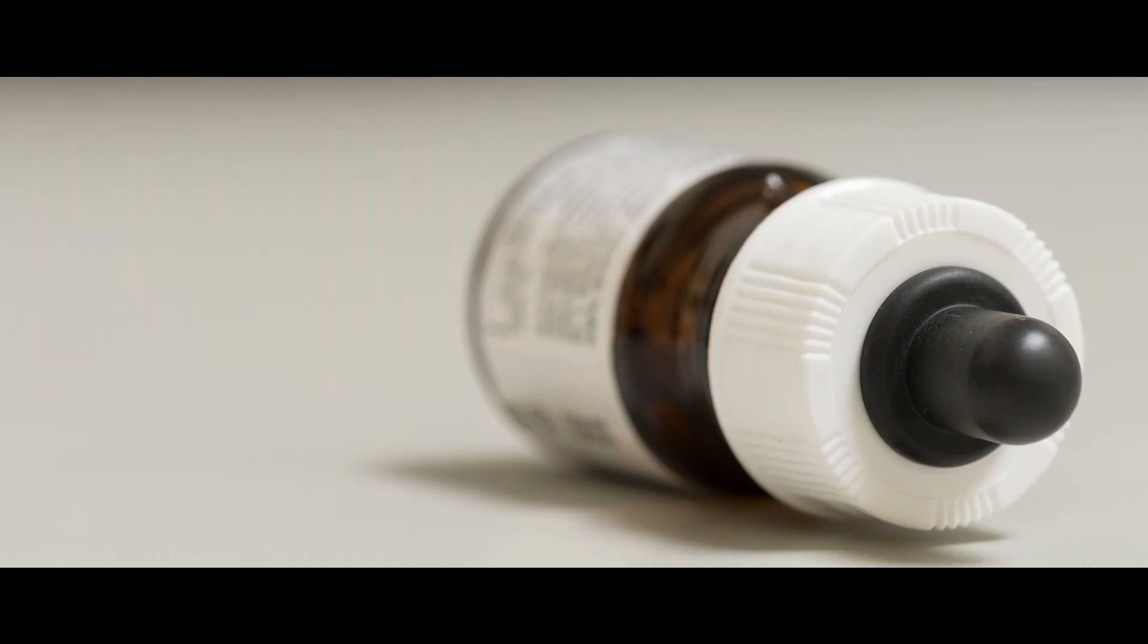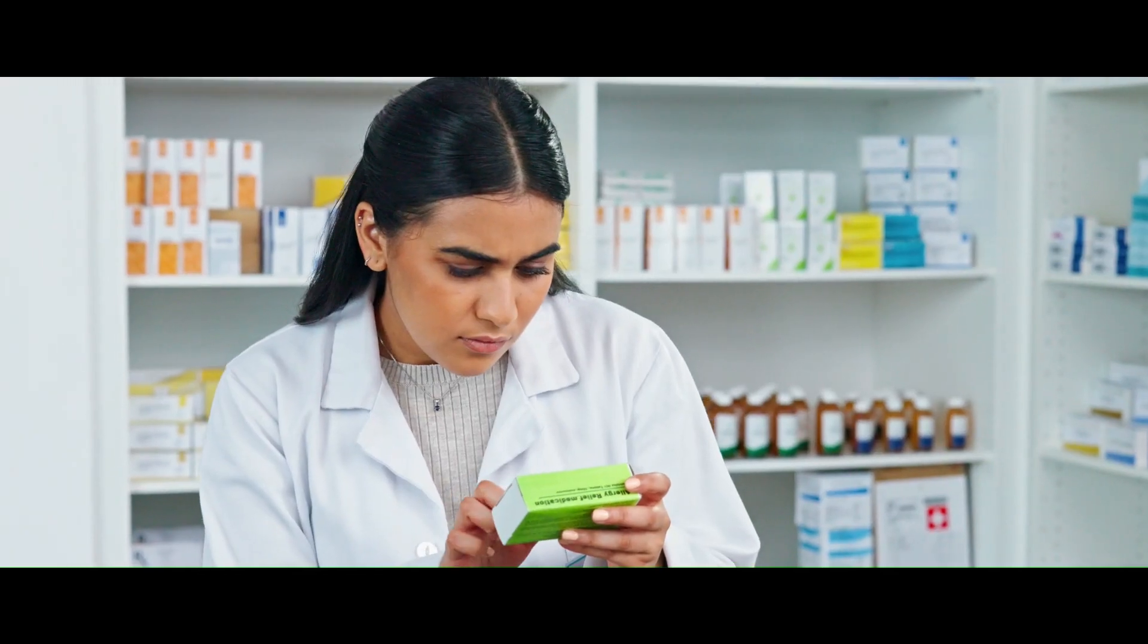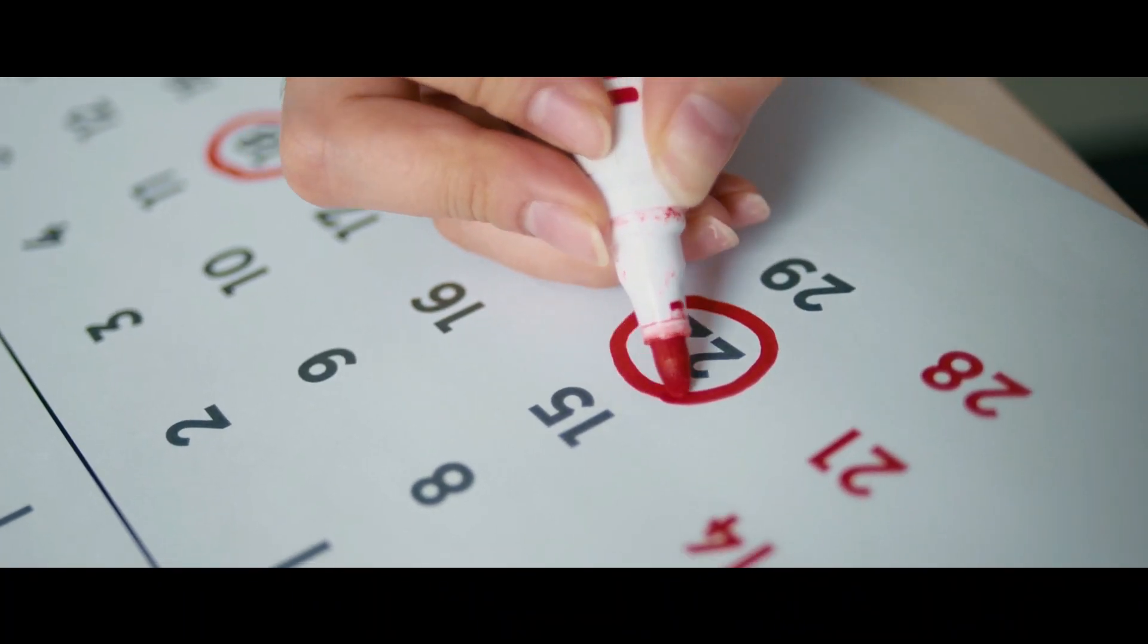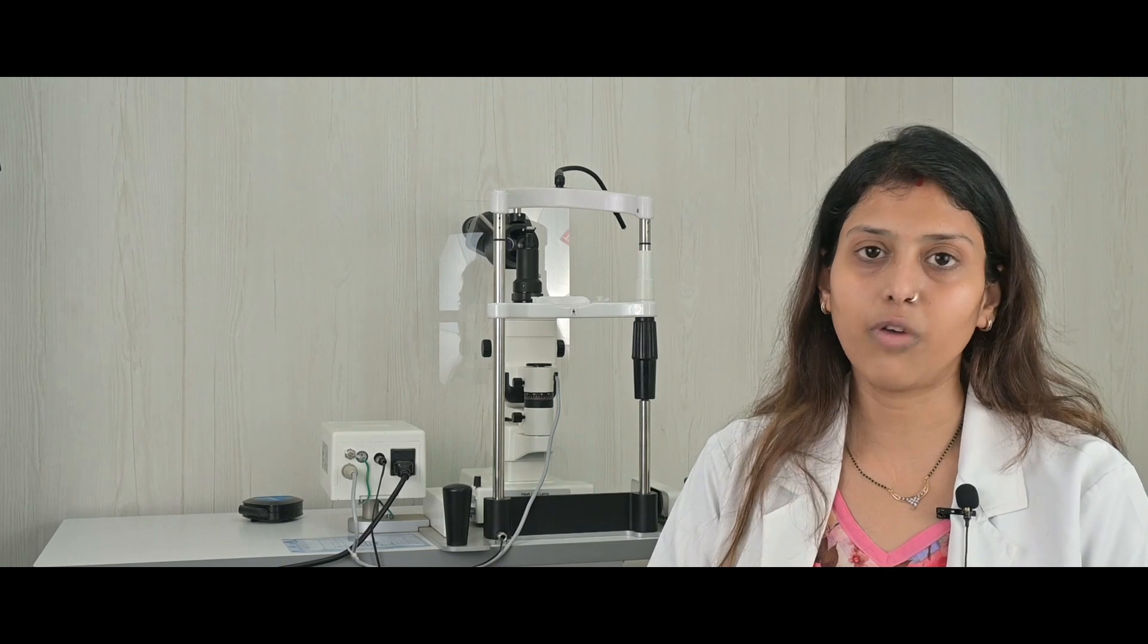So firstly, while buying eye drops, you should always check the manufactured date, the expiry date. And also whenever you open any eye drop, you should just mark it with a date. As every eye drop has to be used only for one month after the opening of the bottle.